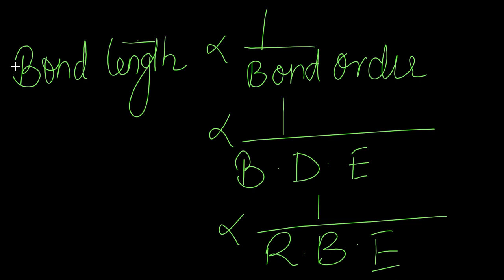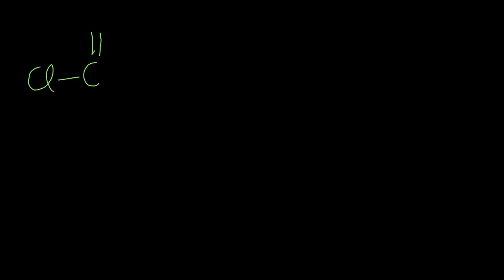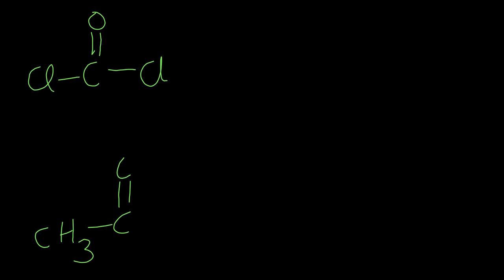Here we will do some other questions to concretize these concepts. The very first question is: we have Cl double bond O and Cl (molecule A), and the next structure is CH₃C double bond O and Cl (molecule B). They are asking us to compare the bond length of A and bond length of B.